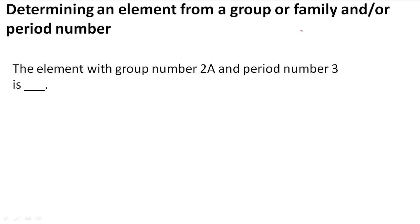Determining an element from a group or family and/or period number. Given these things, can we determine the element? In this question, it says the element with group number 2A and period number 3 is what element?